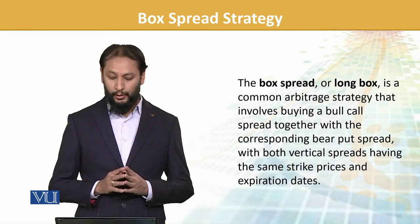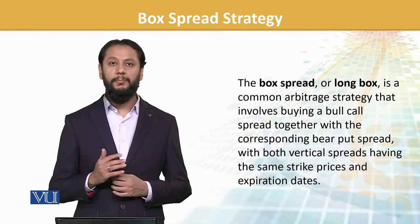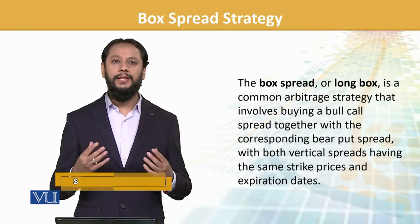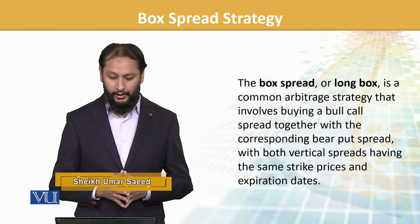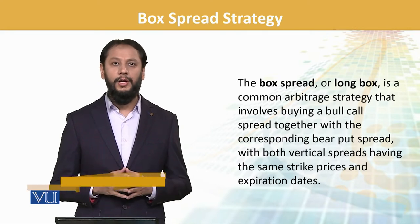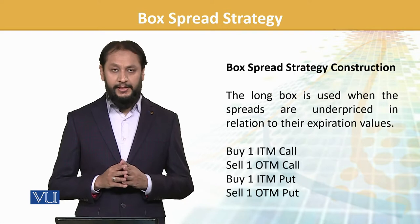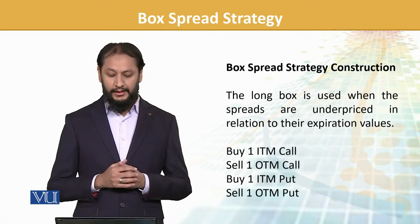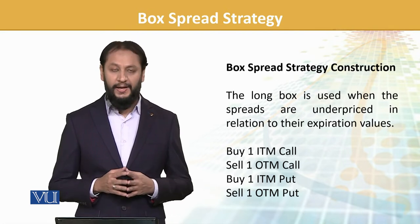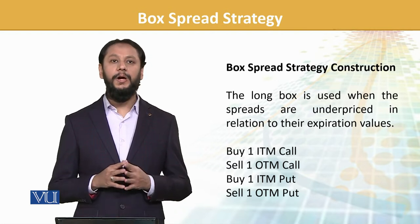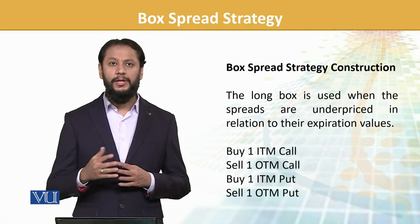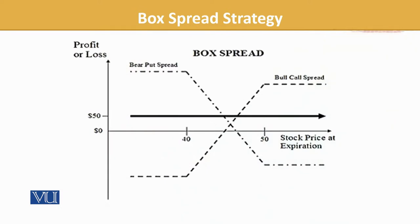The box spread involves buying a bull call spread together with the corresponding bear put spread. For the strategy to work, we buy one in-the-money call (which will be expensive), sell one out-of-the-money call, buy one in-the-money put, and sell one out-of-the-money put. This combination is entered to gain a return.